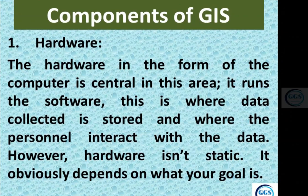Now let's take the components of GIS one after the other. Number one is hardware. Hardware in the form of a computer is central — it runs the software, this is where collected data is stored, and where personnel interact with the data. However, hardware isn't static; it obviously depends on what your goal is.